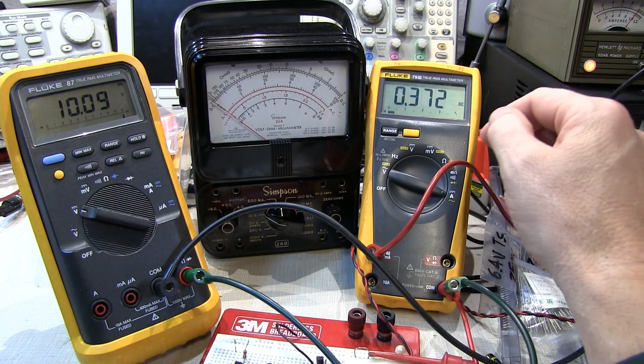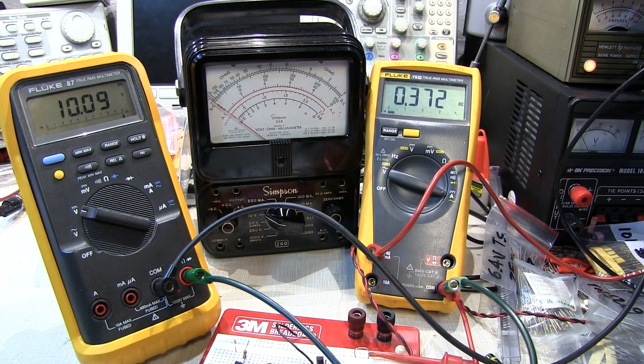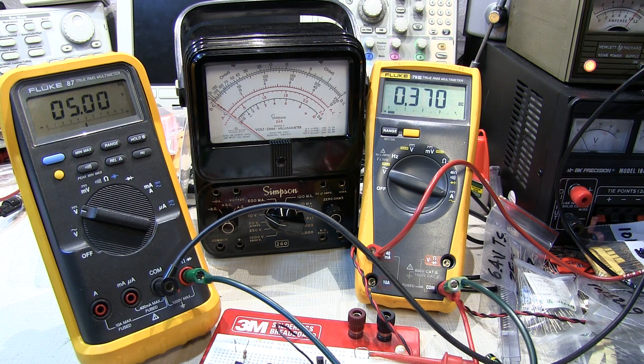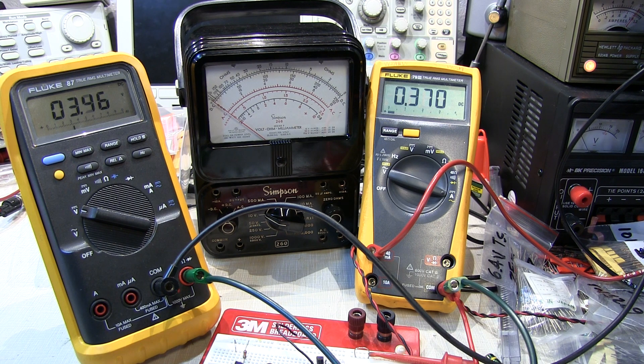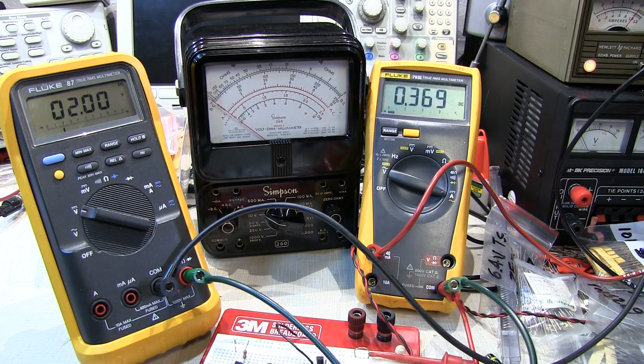So now with 10 volts at the output of the current source, 372 microamps. And let's turn that voltage down. If we go down to say about 5 volts now, we went from 372 down to 370. Only a 2 microamp change in that current source. Let's go down to about 2 volts across the current source.